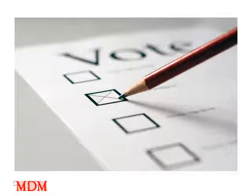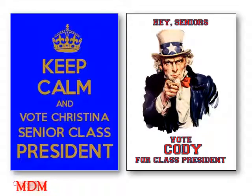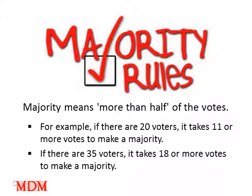Why do we need mathematical theory about something so simple as voting? How difficult could it be to find a simple, fair, and consistent procedure for determining the outcome of an election? When an election involves only two candidates or alternatives, the situation is straightforward. For instance, suppose there is an election between Christina and Cody for senior class president. Choosing the candidate preferred by the majority of voters provides a fair and consistent way of deciding the outcome. You've probably heard the phrase majority rules. Majority means more than half of the votes.